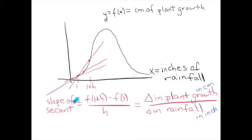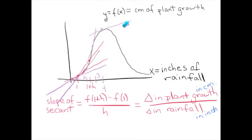Let's think more about what instantaneous rate of change means. How fast are the plants growing if the inches of rainfall equals 2? You have a higher slope — they're changing faster. If the inches of rainfall is 3, the plants are growing even faster. If the inches of rainfall is 4, the plants have leveled off a little bit — they're not growing as fast. The slope is high at first, then decreases. At x equals 6 inches of rainfall, the plants have started to decrease their growth, so they're dying.